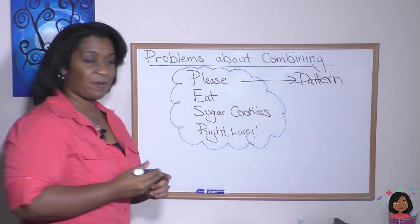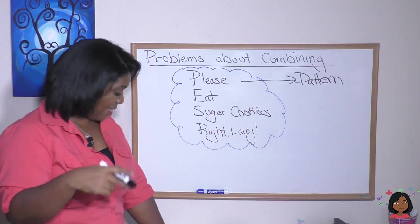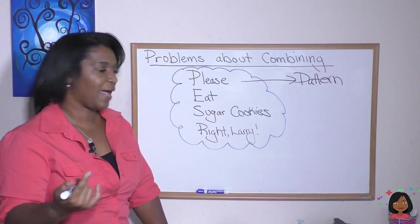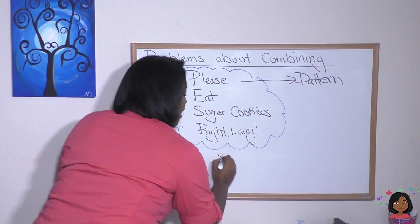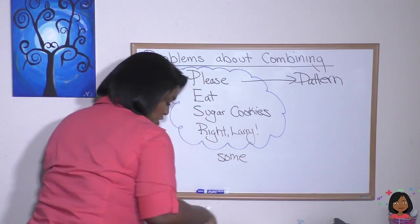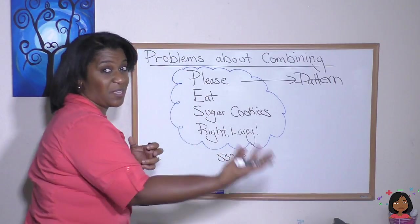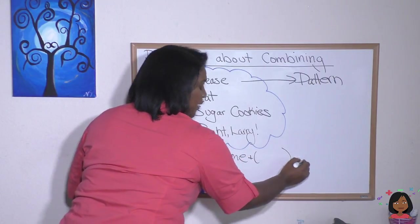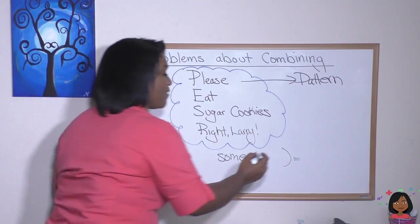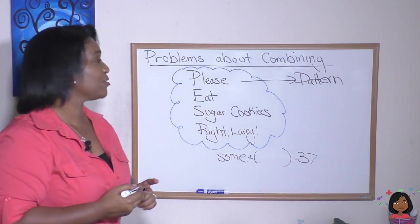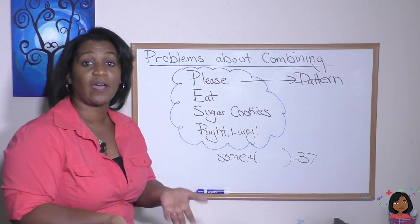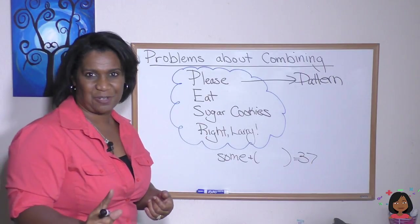So remember the DVR had 26 shows and then there were a total of 37. So that fits our addition pattern. Watch. If we had some, which was 26 plus some more, we don't know what that some more is, but it equals a total of 37. That fits our addition pattern. So the P stands for pattern. Figure out the pattern that you're working on. We're working on an addition pattern.